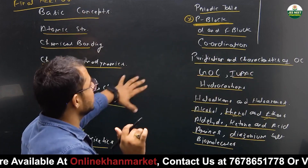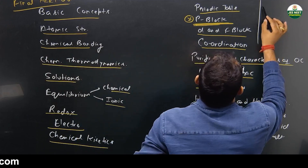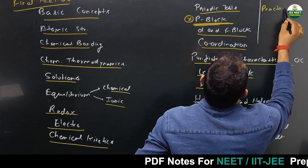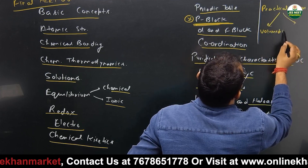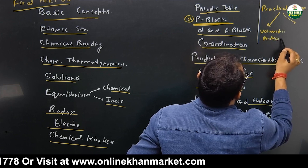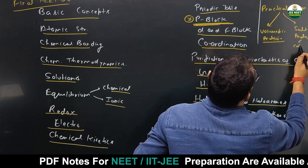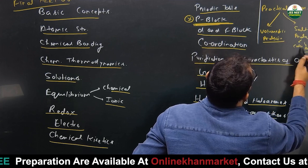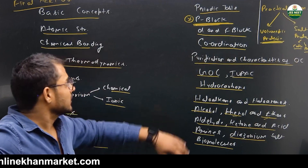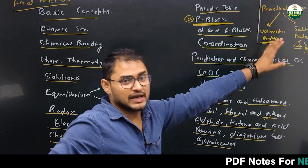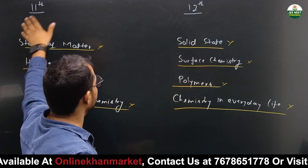Now, this is the syllabus that is left, but there is one more point — something has been added to your syllabus. It is Practical Chemistry, which involves volumetric analysis, meaning the titration portion, and salt analysis — that is, tests for cations and anions. This is the new portion that you will be covering this time, in addition to the remaining chapters.